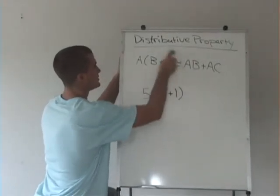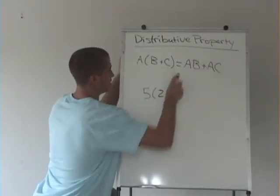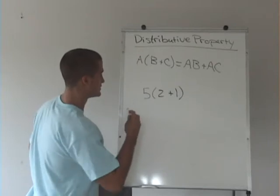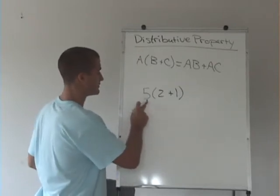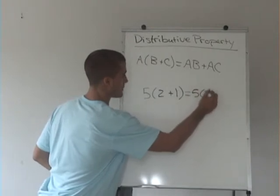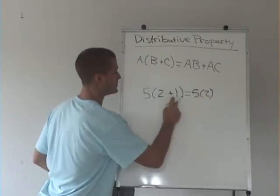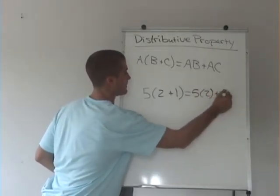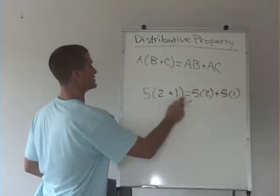This side of the equation is equal to this side, and we can do that with numbers by saying 5 times (2+1) is equal to what this is going to be equal to.